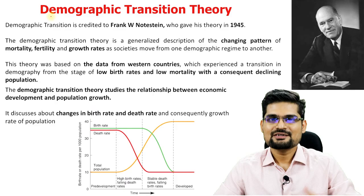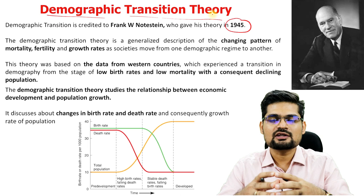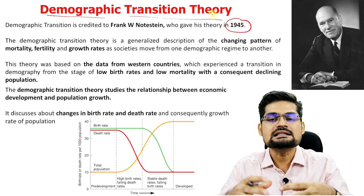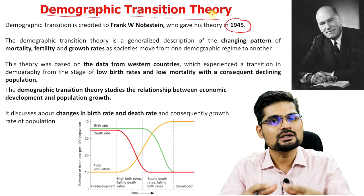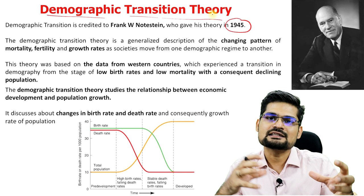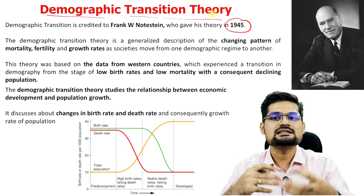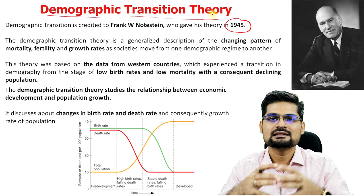Now let's learn about the Demographic Transition Theory, which came in 1945 — the end of World War II — when the entire world was being recreated after the wars. There was lots of restructuring going on. That is when this theory emerged, citing the transition of demography: changes in population patterns, their structure, and different settlement patterns like the development of suburbia. We see this transition in developed and developing countries, which is the basic premise of this theory.